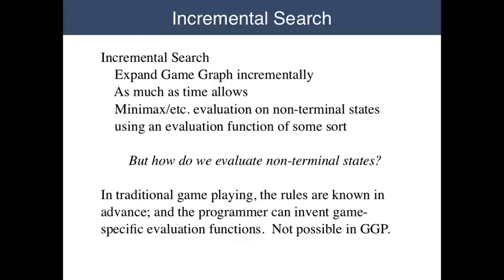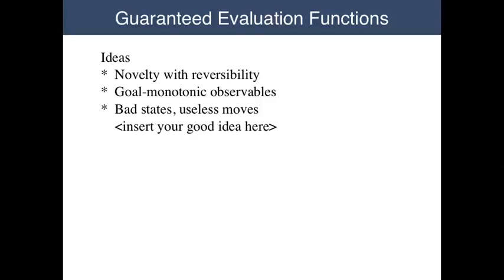Unfortunately, it's not possible for a GGP programmer to invent such game-specific rules in advance, since the game's rules are not known until the game begins. The program must evaluate the states for itself. The good news is that there are some evaluation techniques that always work. For example, there's no harm preferring new states to states that have previously been seen, provided there's a way to get back to the original states. Also, if players can determine that some observable condition corresponds to distance from the goal, then it's a good idea to minimize that quantity.